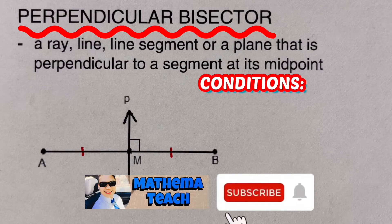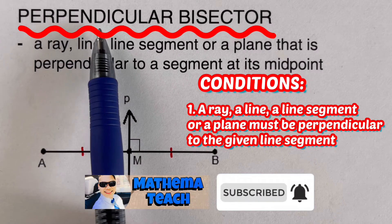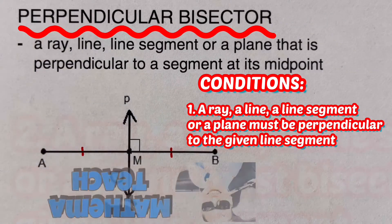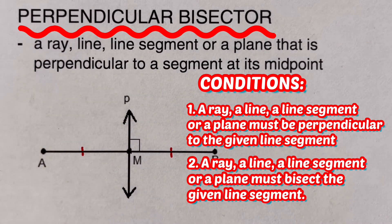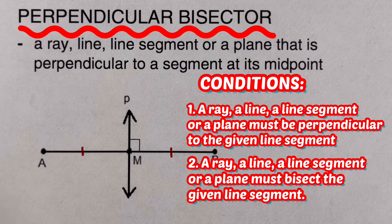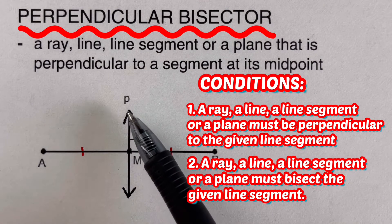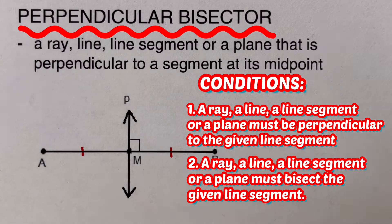First, it has to be perpendicular — it should form a 90-degree angle. It also has to be a bisector at the same time, meaning it should cut the given segment into two equal pieces. In this case, line P is a Perpendicular Bisector to segment AB.